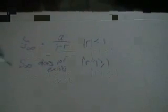In the first case, where absolute value of R is less than 1, we say the series converges.